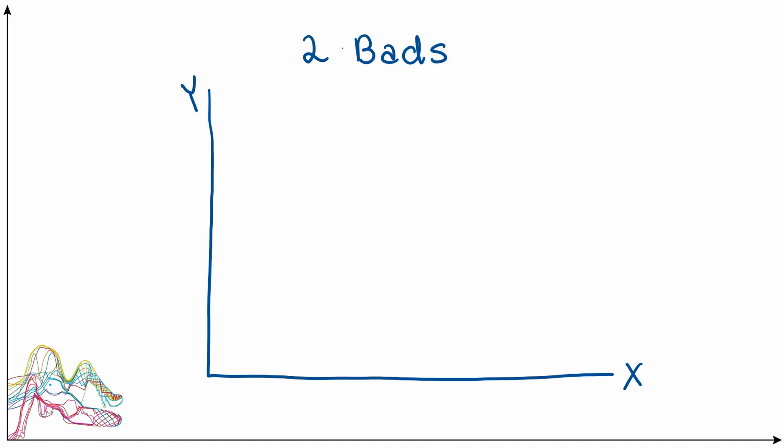Lastly, we can think about the case where X and Y are both bads. Starting at a particular point of consumption, if we add more of X — since X is a bad that makes the consumer less happy — to bring the consumer back to indifference we have to take away some of the other thing that makes the consumer unhappy, which is bad Y. Putting this together, we get a new point on the indifference curve down and to the right. With increasing marginal disutility for both goods, the indifference curves are shaped accordingly.